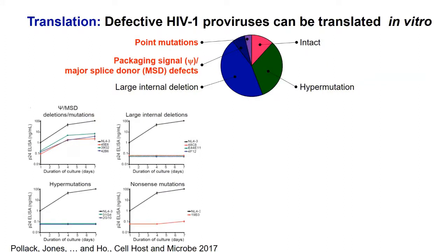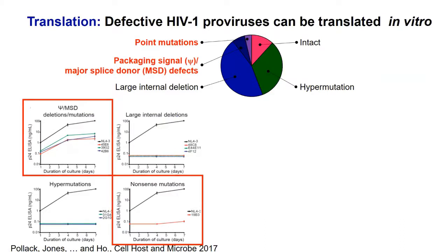Next, we wanted to know whether these proviruses can be translated. We reconstructed these defective proviruses and found they can produce intracellular Gag as shown by intracellular Gag staining, or they can make supernatant p24 as detected by ELISA. The typical Perkin-Elmer assay we use is not sensitive — you need 250,000 virions to be detected. When we look at nanograms of p24 per mL and see a true log increase, we say this is making replication-competent virus.